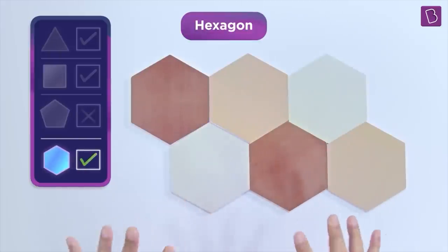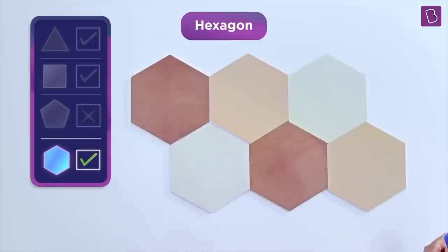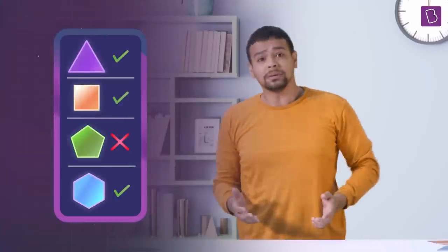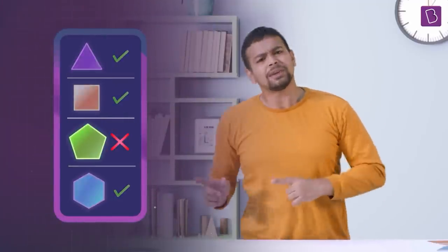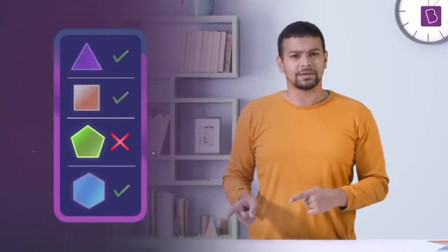So far, we've seen that these regular polygons, the triangle, the square and the hexagon can tessellate. But the pentagons could not tessellate. What is so special about these polygons?